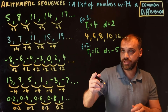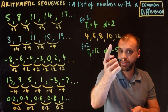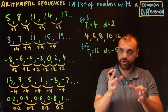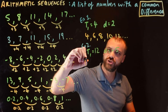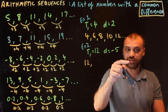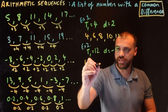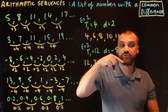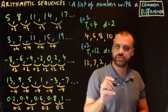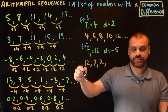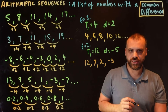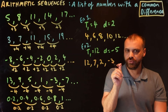Another example: if we were given that the first term is 12 and the common difference is negative five, the next term is five less, which is seven. The next term is five less than that, which is two. The next term is five less than that, which is negative three.